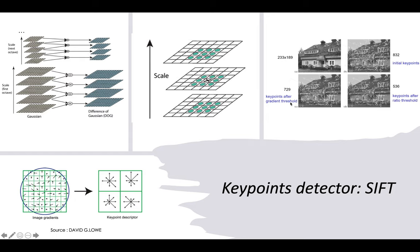We set a gradient threshold as a minimum threshold to filter keypoints. If we also set a ratio threshold, we get much better keypoint results. For each keypoint, we use a keypoint descriptor to describe what is happening around the keypoint at each scale, including orientation directions.